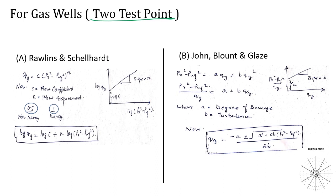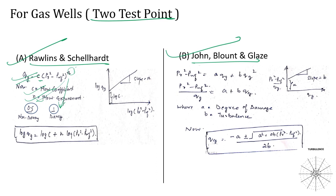For gas wells with two test data points, the Rawlins and Schellhardt method can be used: q_g = C·(P_r² − P_wf²)^n, where C is the flow coefficient and n is the flow exponent. When n = 0.5, non-Darcy flow dominates; when n = 1, Darcy flow applies. Taking log of both sides gives a straight line: log q_g = log C + n·log(P_r² − P_wf²), from which n and C can be identified.